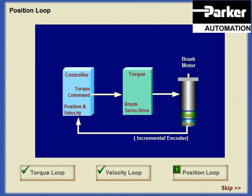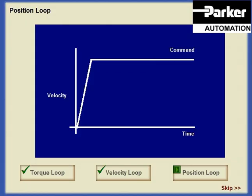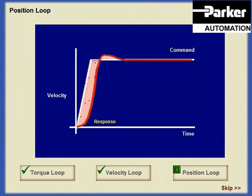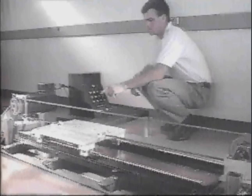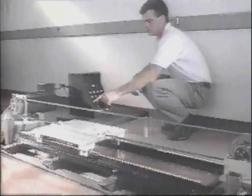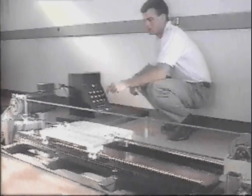In this configuration, a single incremental encoder can be used to provide both position and velocity feedback. One system characteristic that complicates servo control is delayed response. When the dynamics of the process being controlled causes a delay between command and motor response, compensation must be added to the control loop to prevent drastic overshoot.